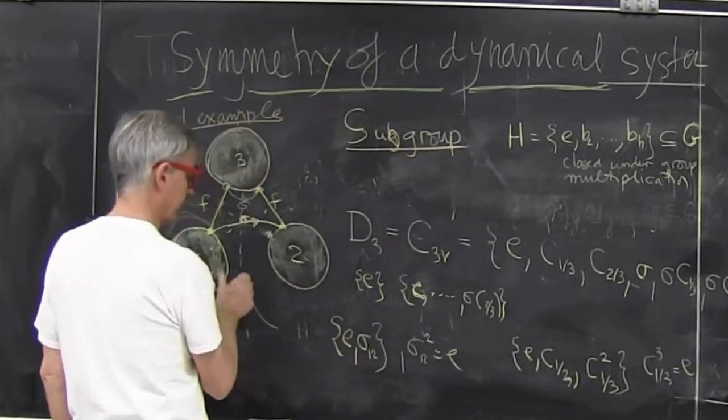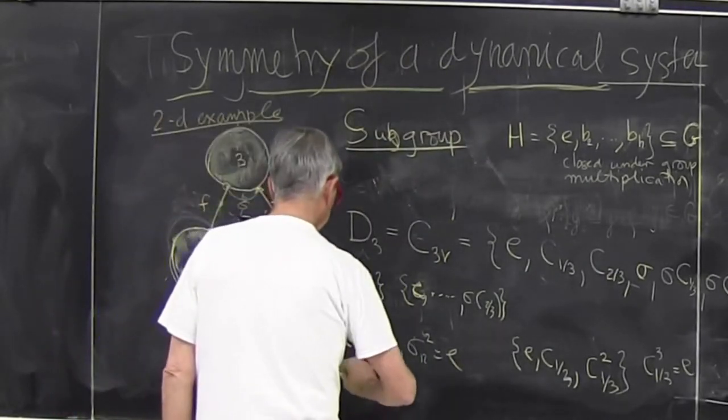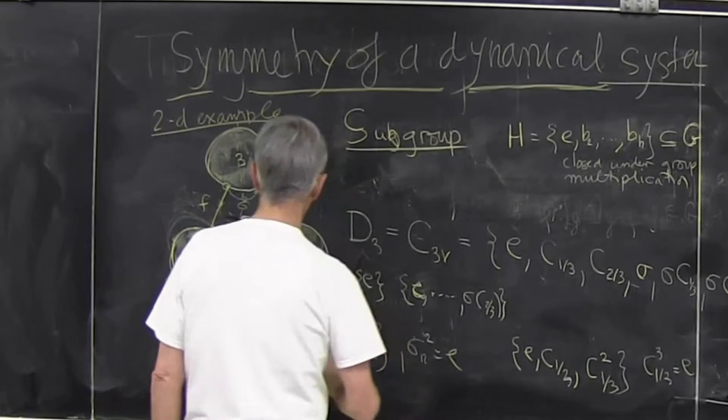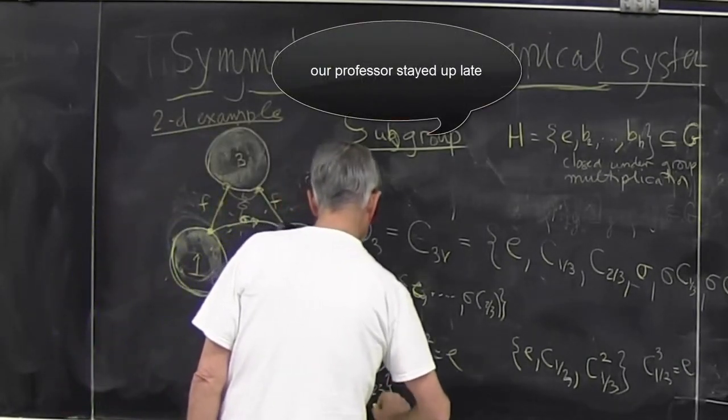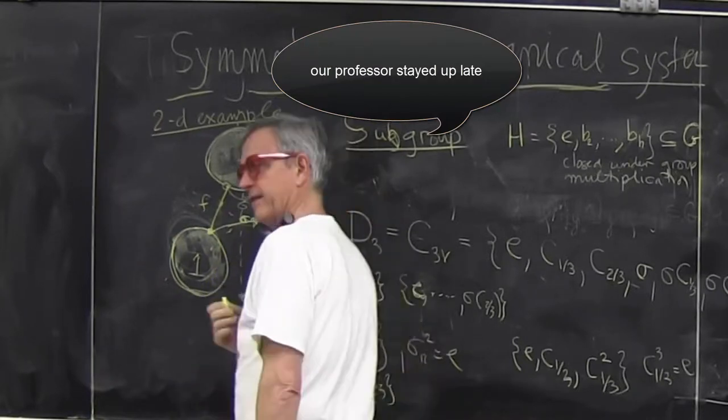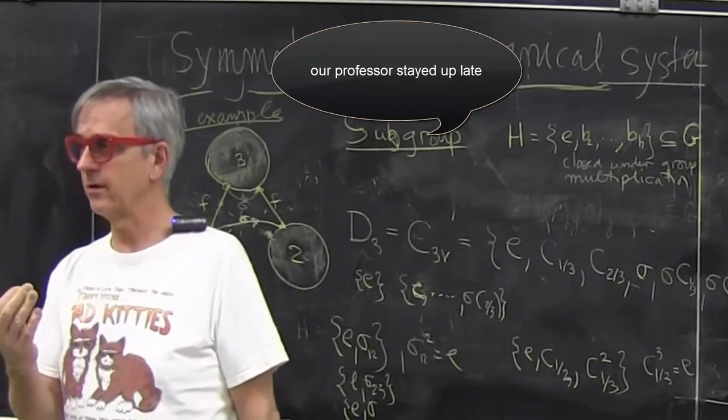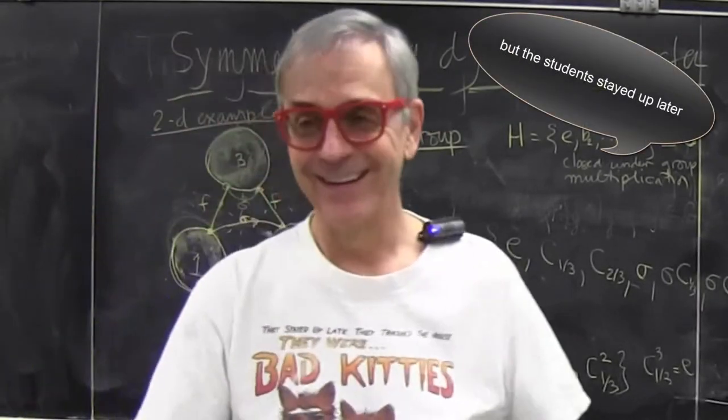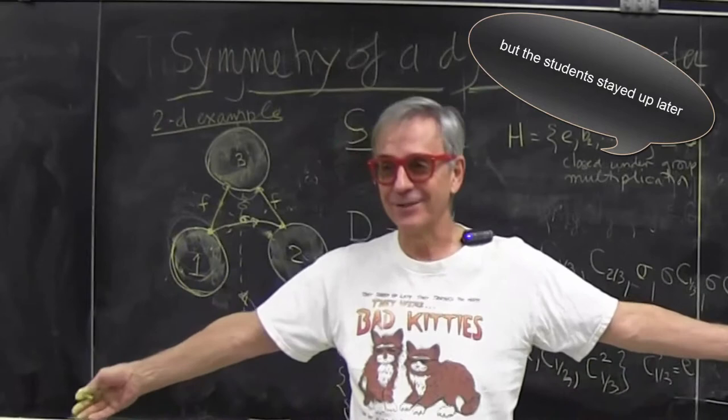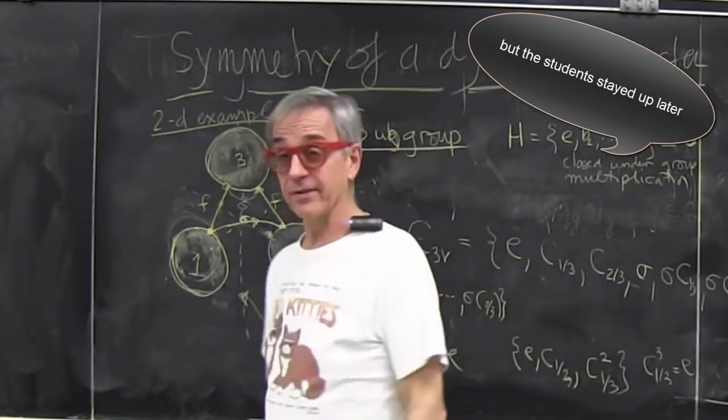Once I understand this is a group, then also there's a subgroup called E sigma two three. Did I hear somebody yawn? I mean, I stayed up until four. How long did you stay up? Four thirty. I defer to sleep deprived graduate students.